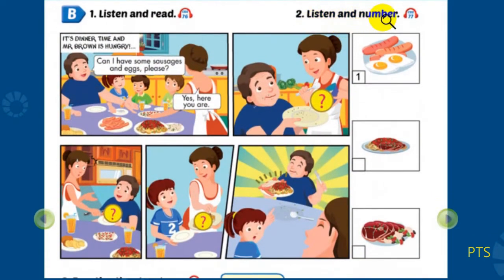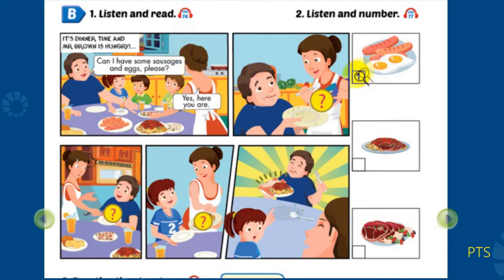Part B2: Listen and number. Look at the pictures. Listen. There is one example. 1. It's dinner time! Mmm, I'm hungry. Can I have some sausages and eggs, please? Yes. Here you are. Thanks. Can you see Number 1? This is an example.